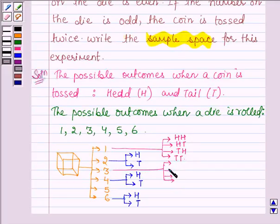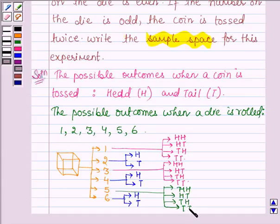Again, the same four possible outcomes: head-head, head-tail, tail-head, and tail-tail. When 5 appears, again the same four possible outcomes: head-head, head-tail, tail-head, and tail-tail.